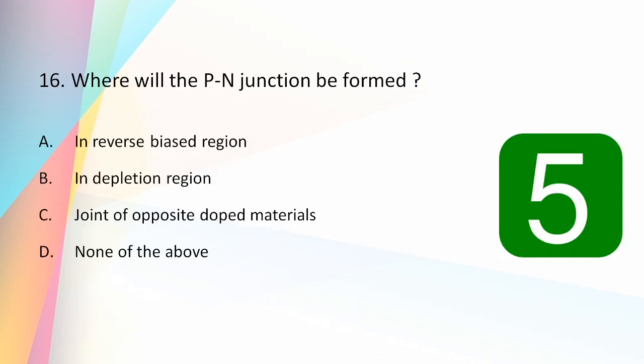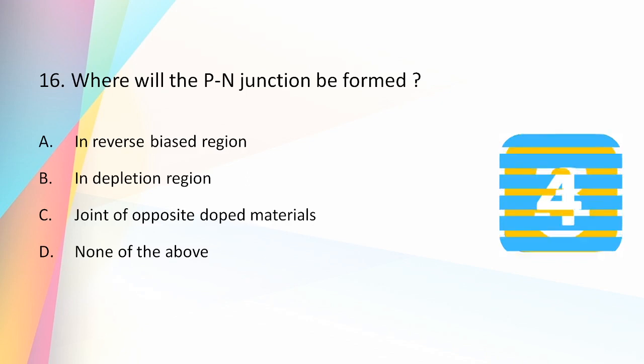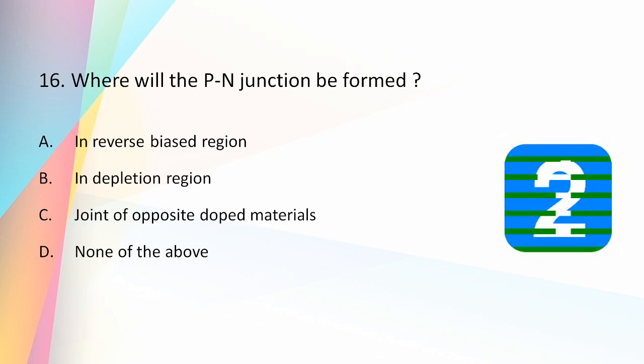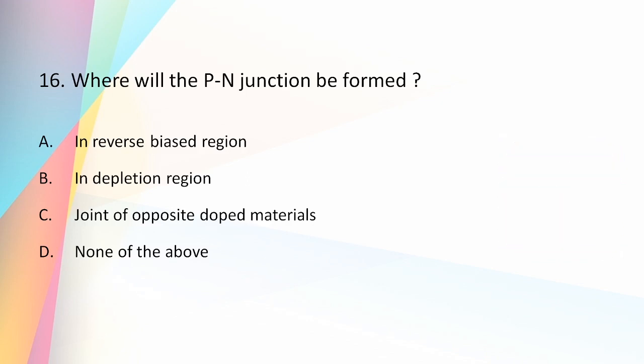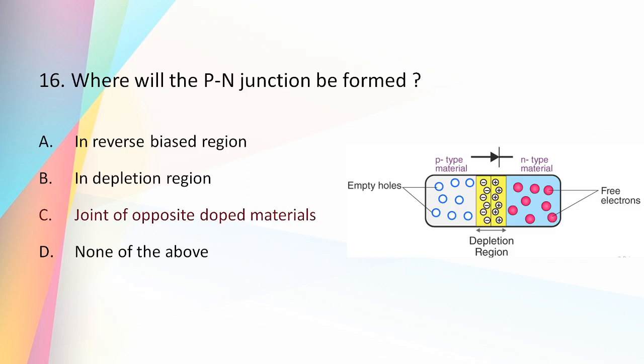A PN junction is formed at the joint of opposite doped materials. The PN junction forms at the point where two oppositely doped materials, P-type and N-type, are connected.